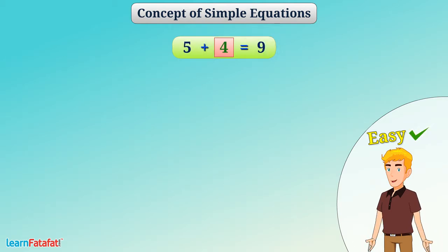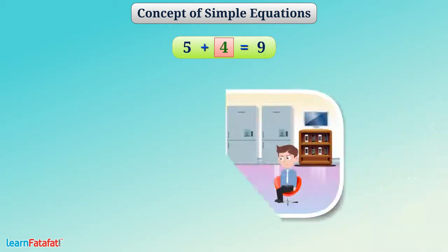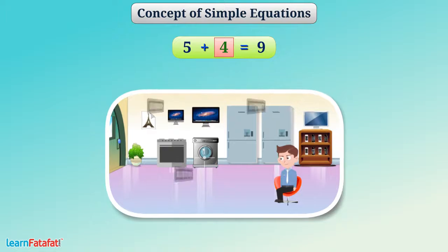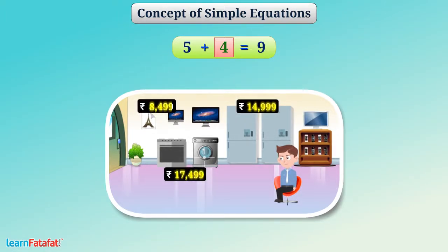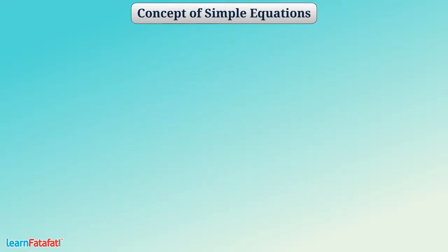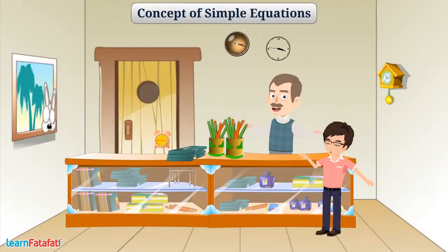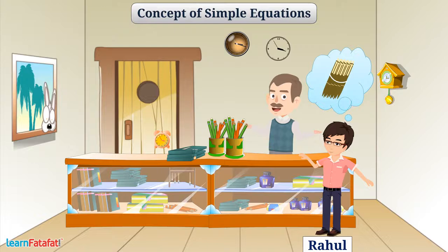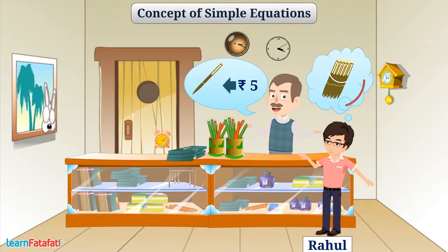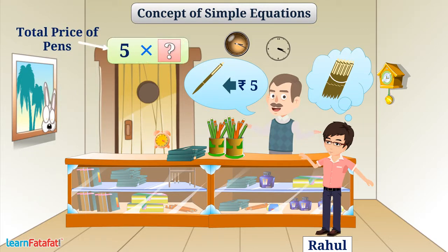In our lives, we come across many situations where we have some unknown number. For example, Rahul is purchasing some pens. The shopkeeper sells pens at the rate of Rs. 5 per pen. The total price of pens can be written like this.